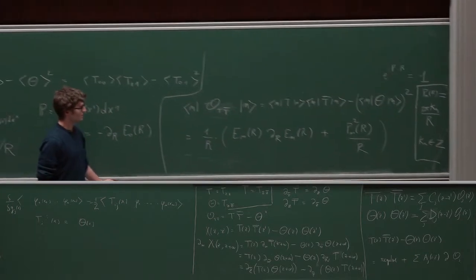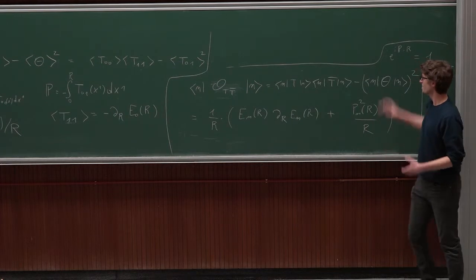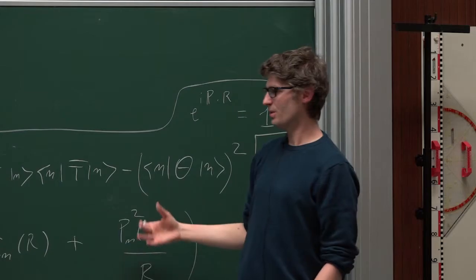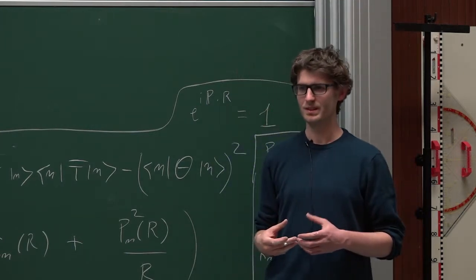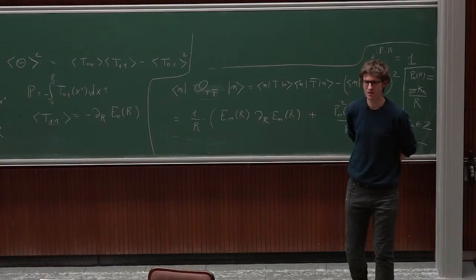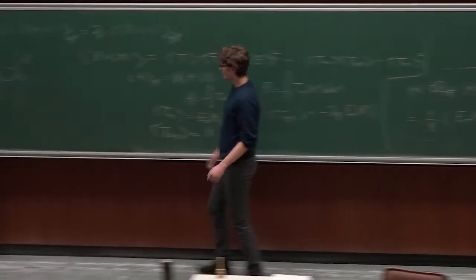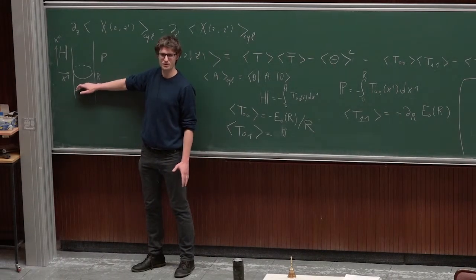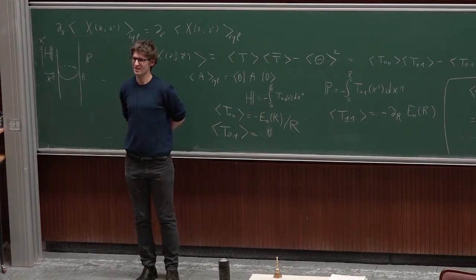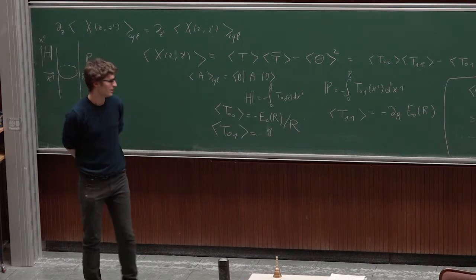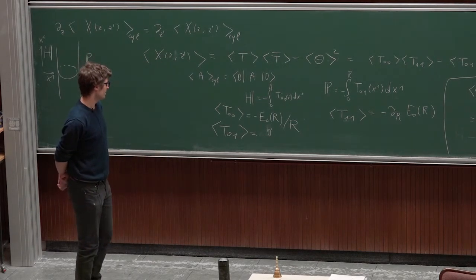Given this result, I'll show you how to apply this to derive how the energy levels are deformed in the TT-bar deformation. The assumption is that n is a translation-invariant state — it's a state defined on these slices and it's an eigenvalue of the Hamiltonian, so it evolves just with a phase.